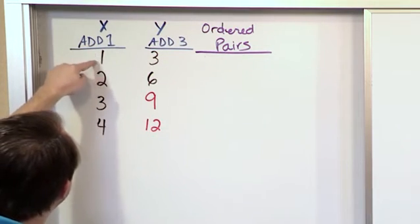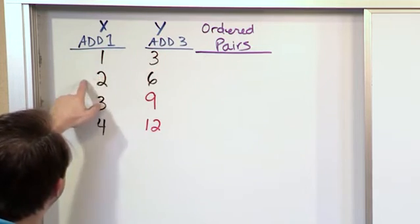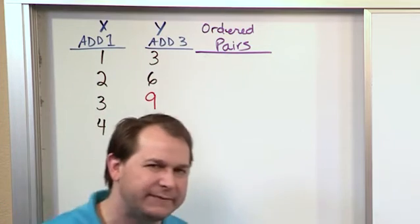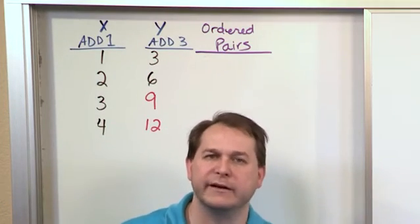Because what we're saying here is this is a table. The 1, even though this is a column, the 1 goes with the 3, the 2 goes with the 6, the 3 goes with the 9, and the 4 goes with the 12. You have to kind of hang on with me here as we go through this.